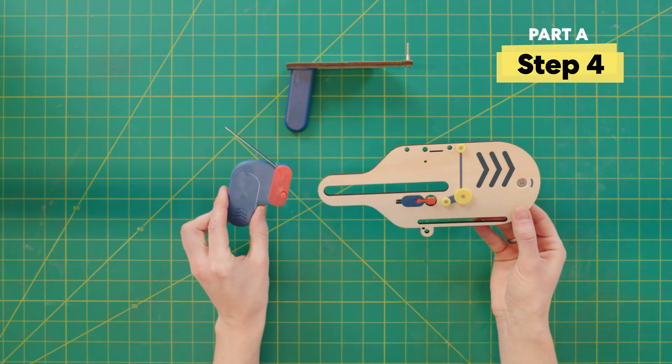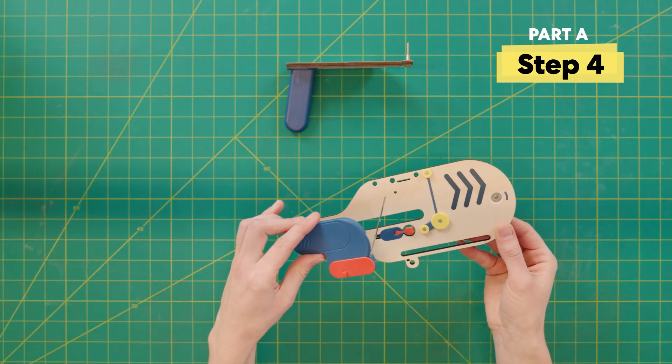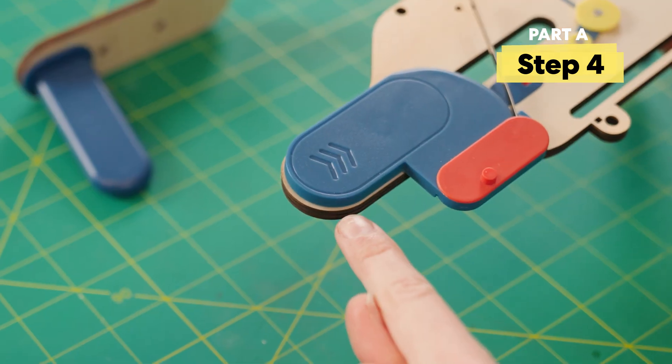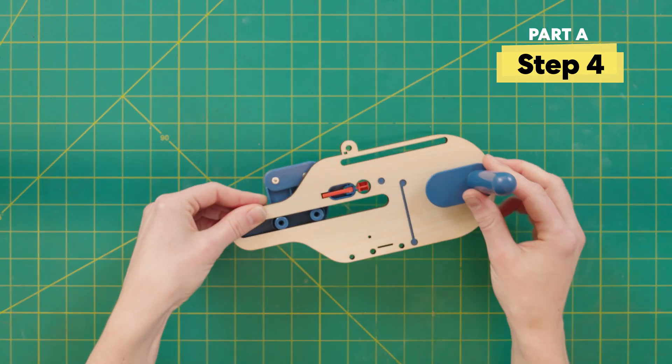Next, grab the piece with the spring and set it onto your big platform. It sets in the slot so it can slide back and forth. Make sure to slide it all the way back so we're ready for the next step. Then flip it over.